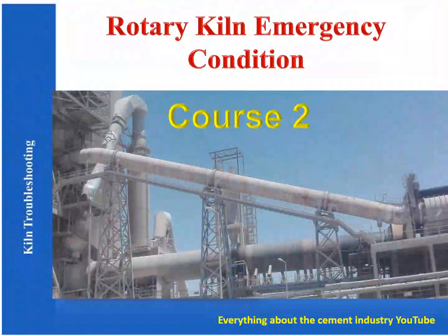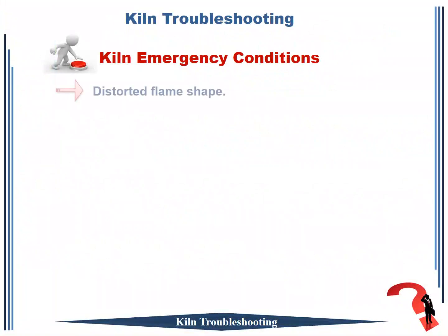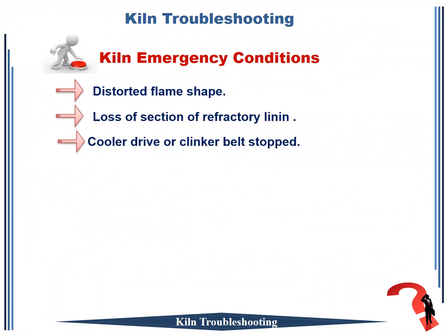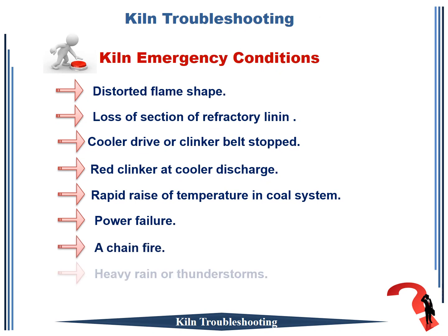Rotary kiln troubleshooting. In this topic will be explained the most important points of rotary kiln emergency conditions. Course 2. This topic includes: distorted flame shape, loss of section of refractory lining, cooler drive or clinker belt stopped, red clinker at cooler discharge, rapid rise of temperature in coal system, power failure, chain fire, heavy rain or thunderstorms.